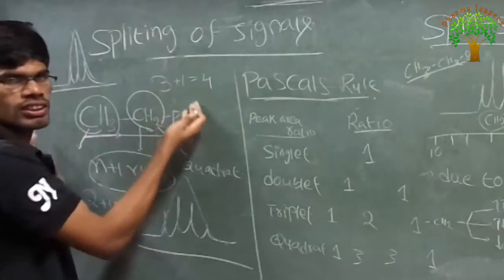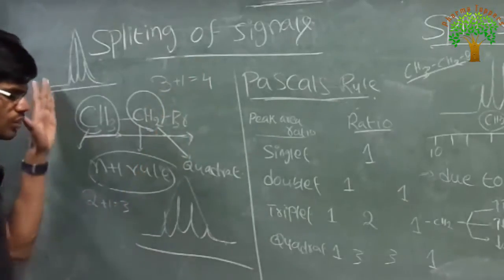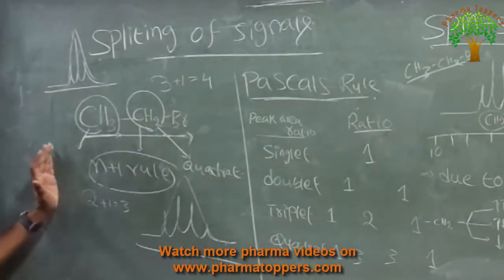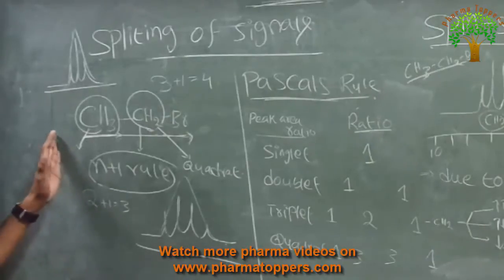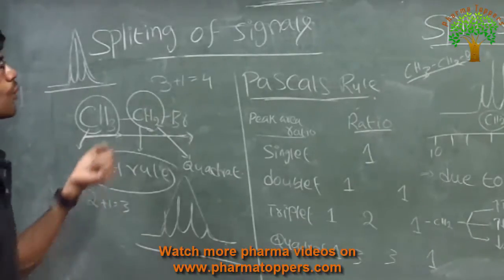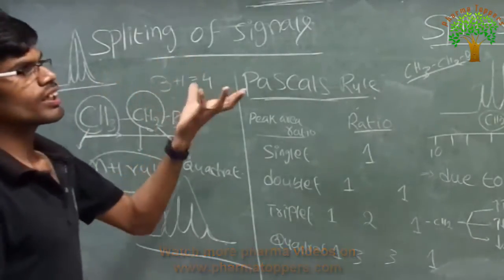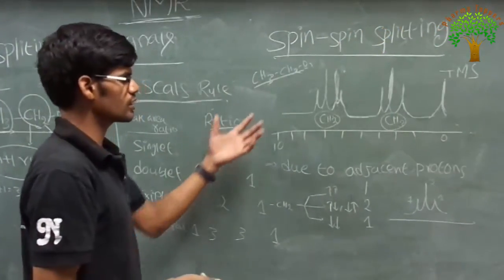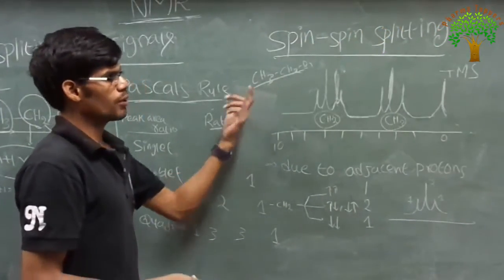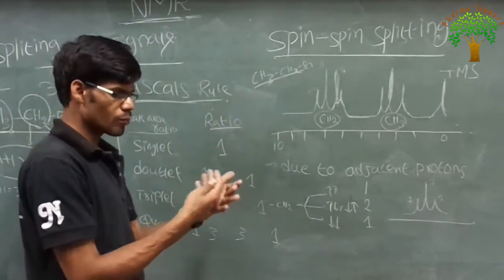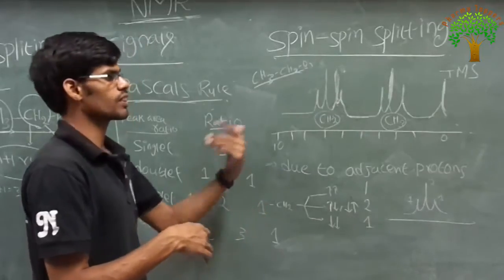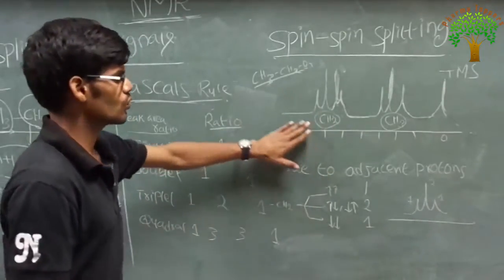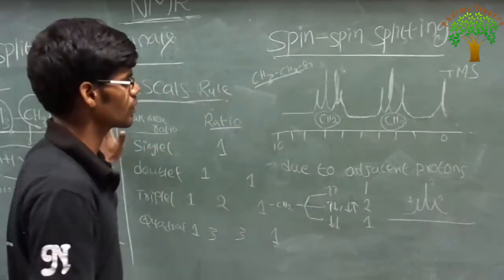This is the splitting of the signals. This is the concept behind splitting of the signals. Then, what is the spin-spin splitting? Spin-spin splitting means the neighboring protons — the neighboring protons' spin will affect the protons of the adjacent groups. Here also the same concept applies.